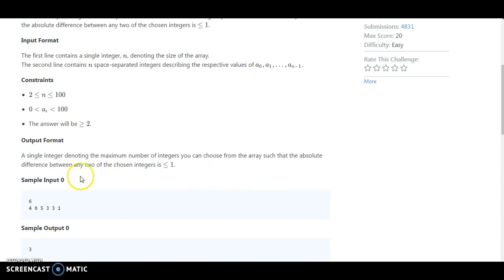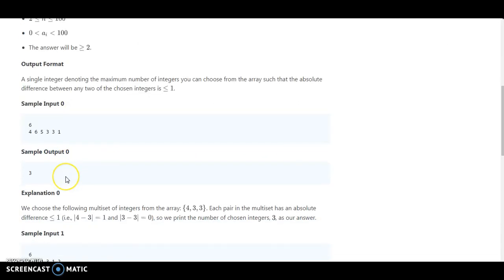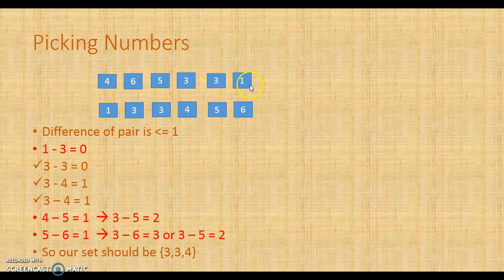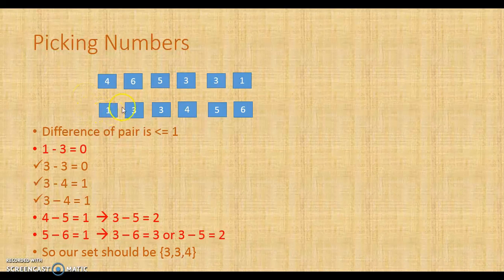Let's understand the input using the PowerPoint slide. As input, they are providing 6 numbers: 4, 6, 5, 3, 3, and 1. If we sort this, the sorted order is 1, 3, 3, 4, 5, and 6.